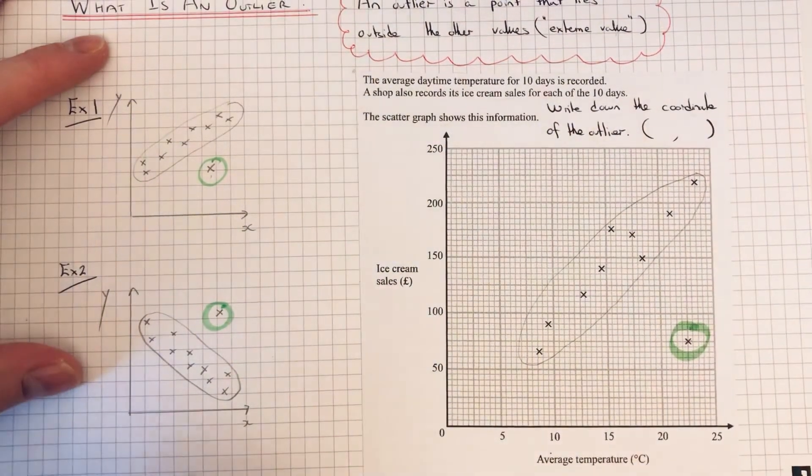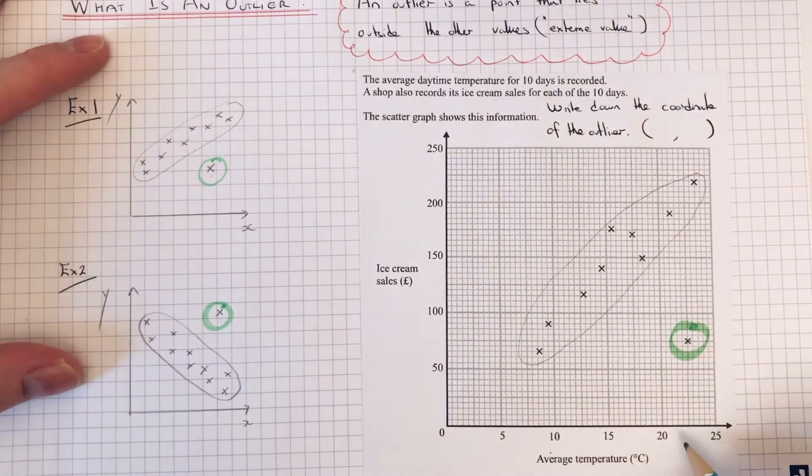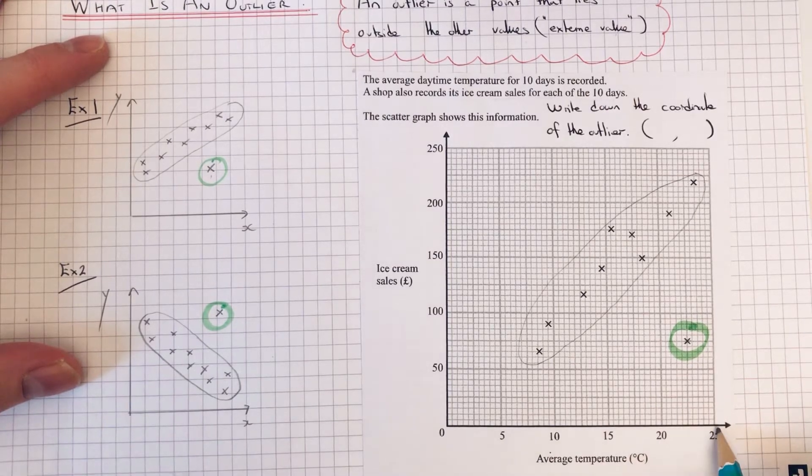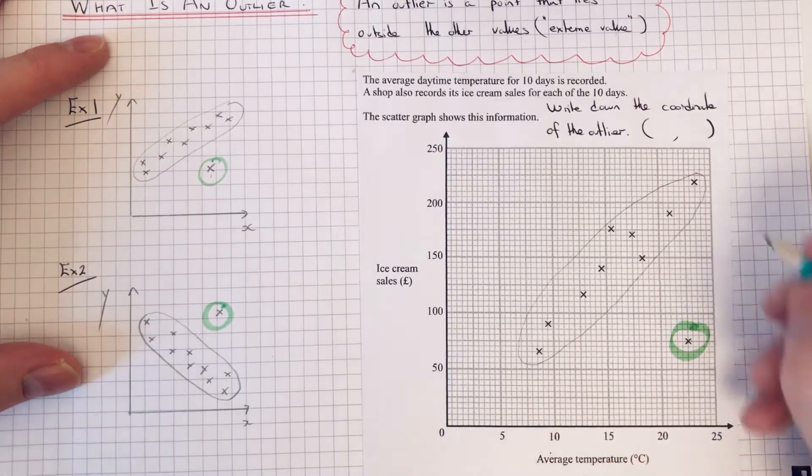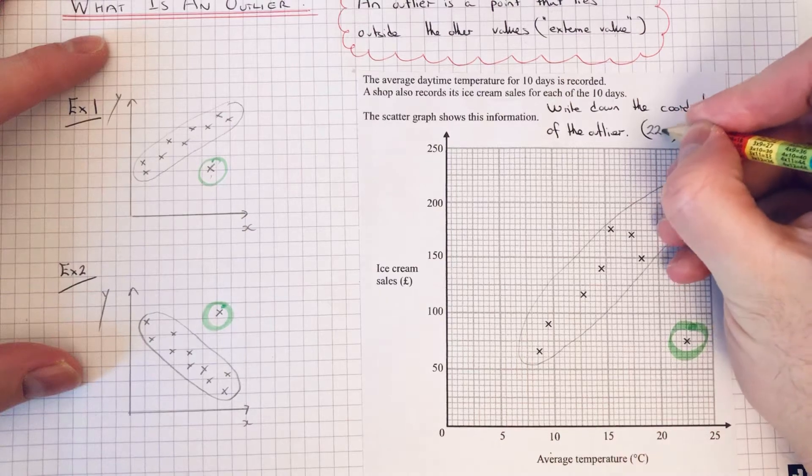So we've just got to write down the coordinates. It's halfway between 20 and 25, so that would be 22.5.